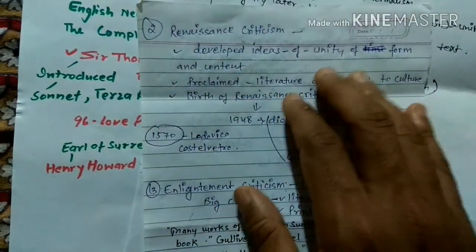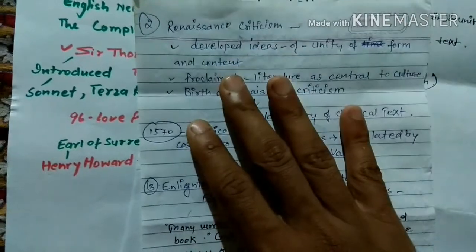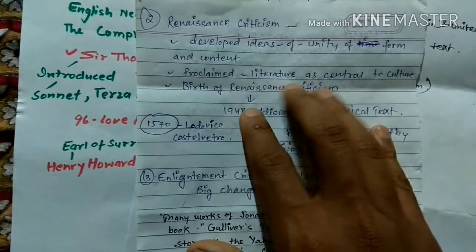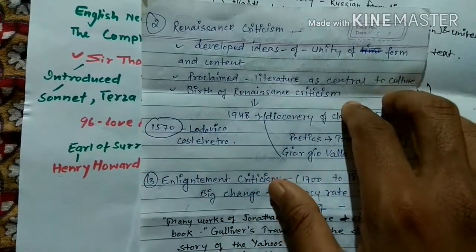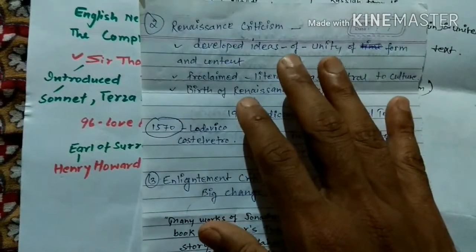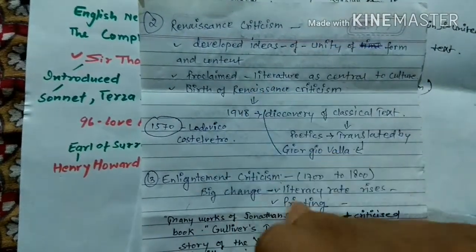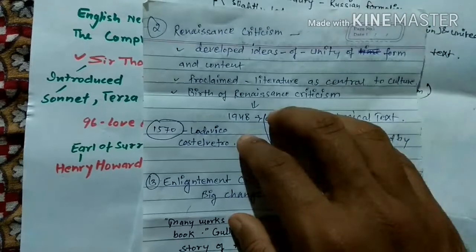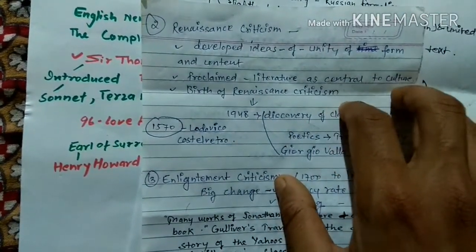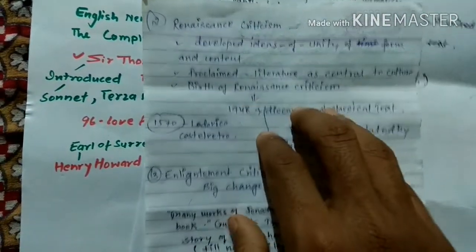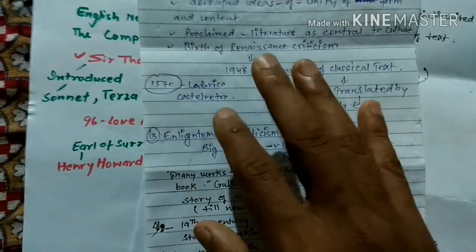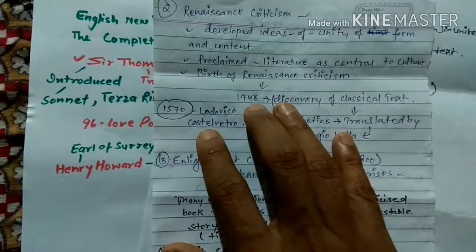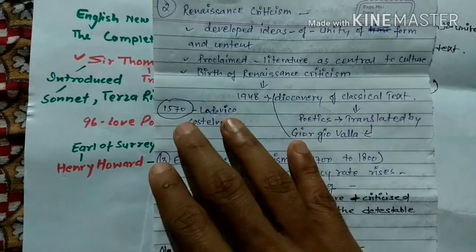Next is Renaissance criticism. Renaissance criticism developed the ideas of unity of form and content, and proclaimed literature as central to culture. For the birth of Renaissance criticism, remember two dates: 1498 and 1517.